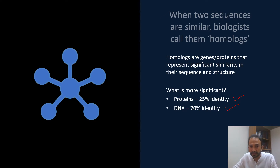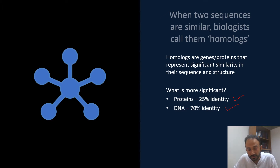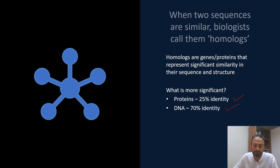The answer is not very straightforward. You cannot simply say that 70% DNA sequence identity is more significant than protein sequence identity, because proteins are generally more conserved than DNA sequences. Protein sequences contain only the coding part, which is important for the structure and function of the gene, making it more difficult to mutate the protein sequence compared to DNA.